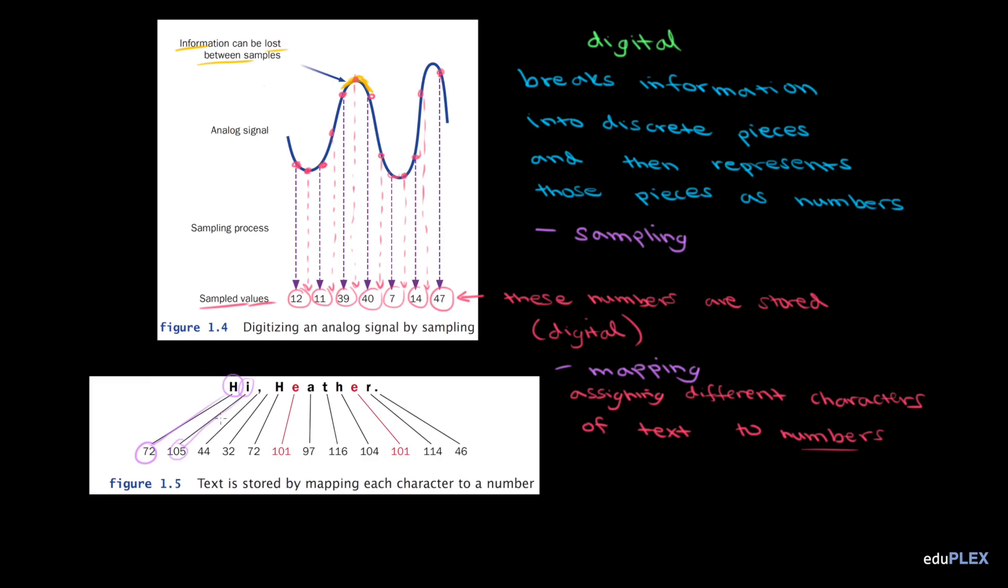Also, note that characters don't just mean letters. It includes punctuation marks like this comma and this period, and even this space. A character is basically anything you could type with your keyboard. All modern electronic computers are digital. All information, whether it's text, images, numbers, audio, video, program instructions, they're all broken into pieces, and each piece is represented as a number, and information is stored by storing those numbers.